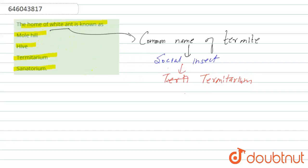Moving on to the options, option 1 is molehill. Molehill is mud dug out by a mole, so this one is incorrect.